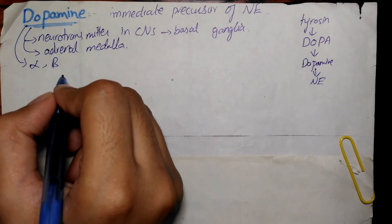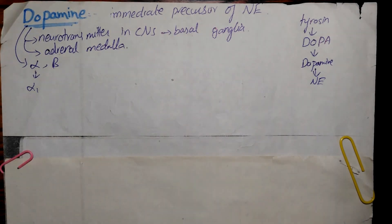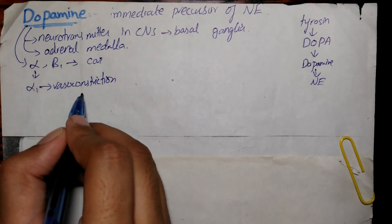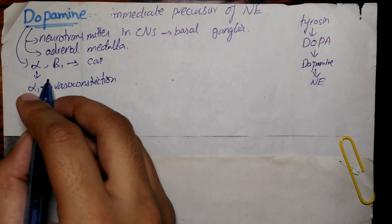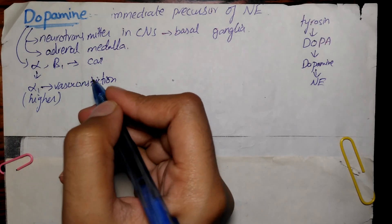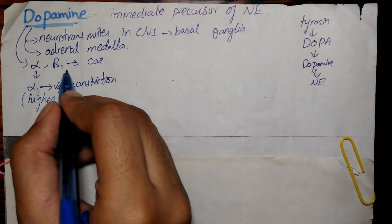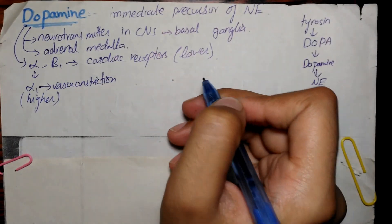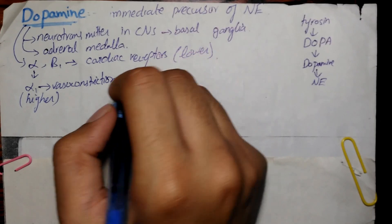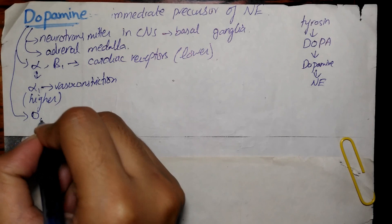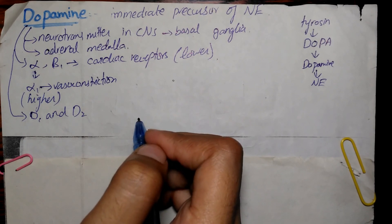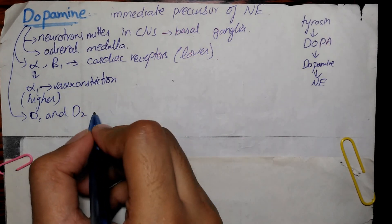At higher doses, dopamine causes vasoconstriction by activating alpha-1 receptors. At lower doses, it stimulates beta-1 cardiac receptors. In addition to these receptors, dopamine also binds to D1 and D2 receptors, which are distinct from alpha and beta adrenergic receptors.